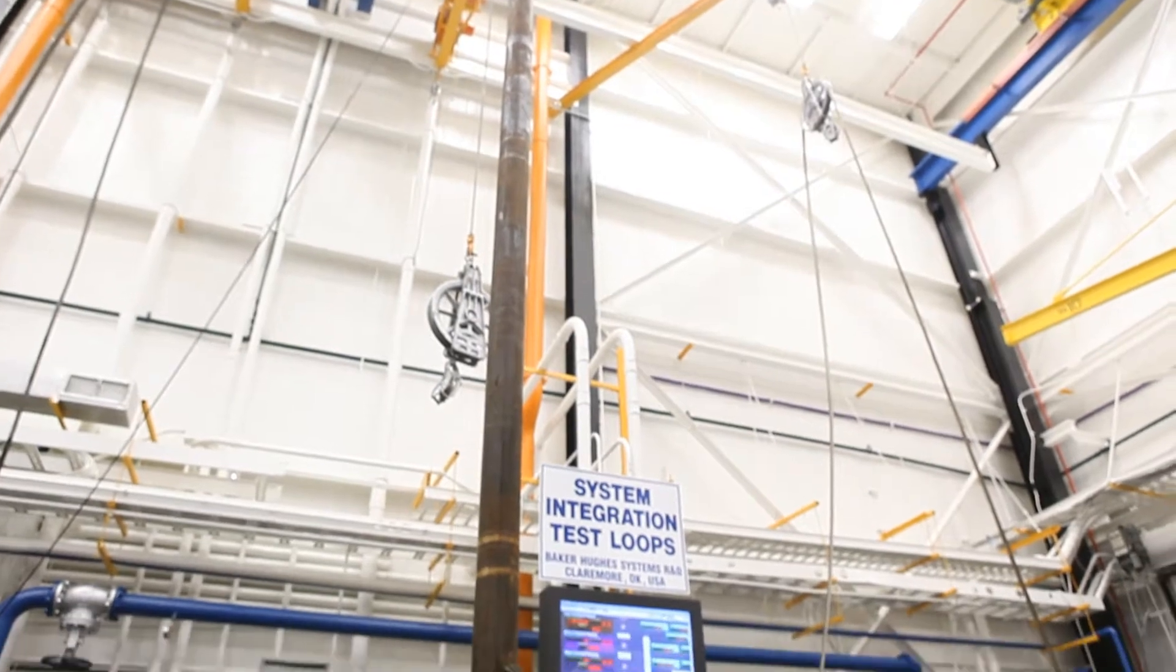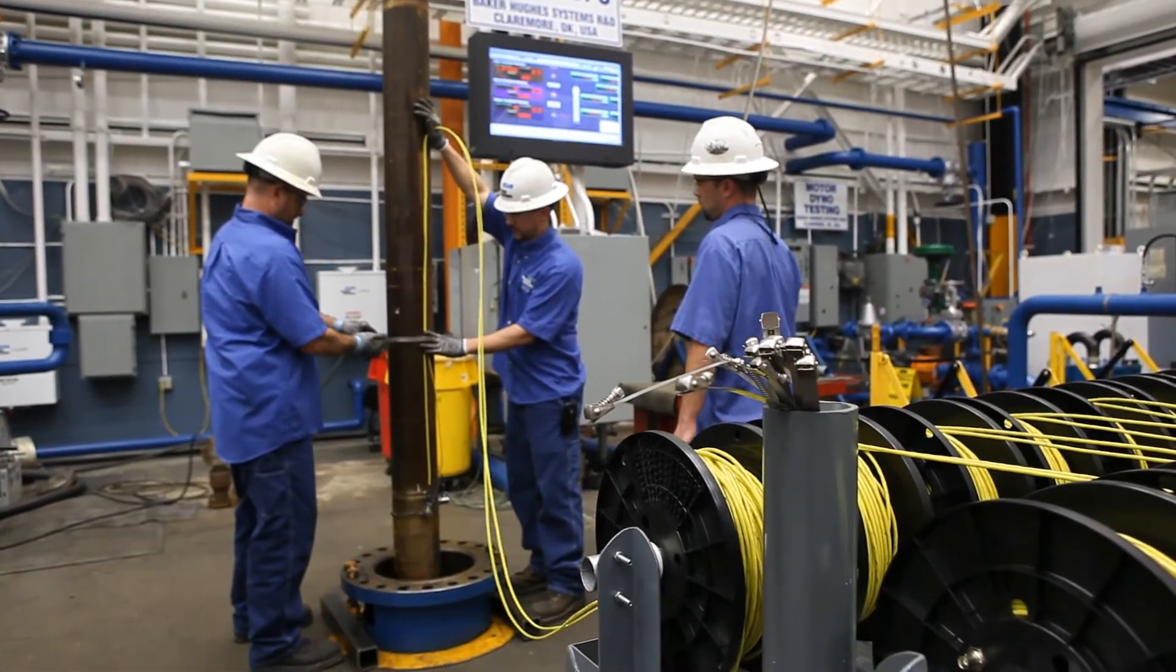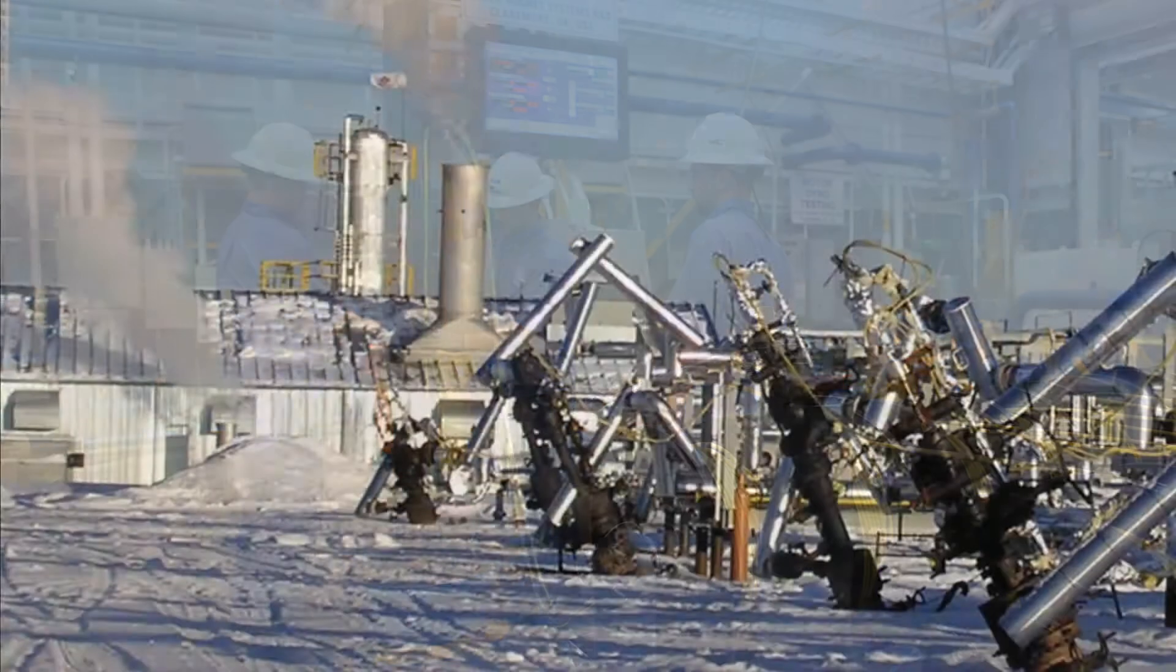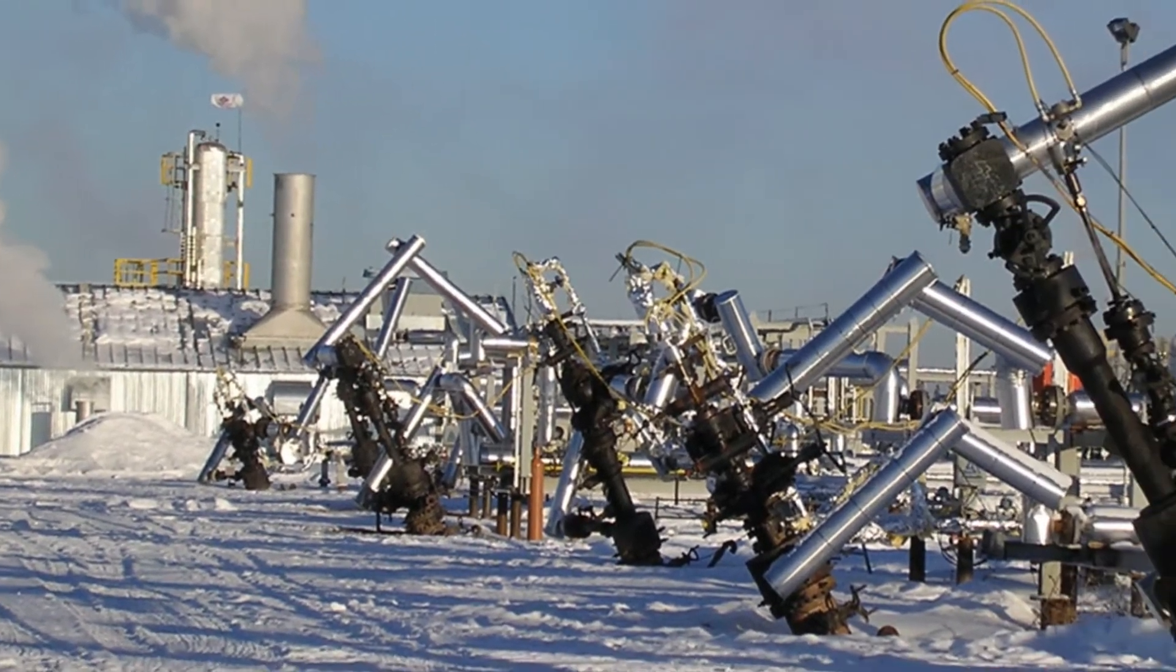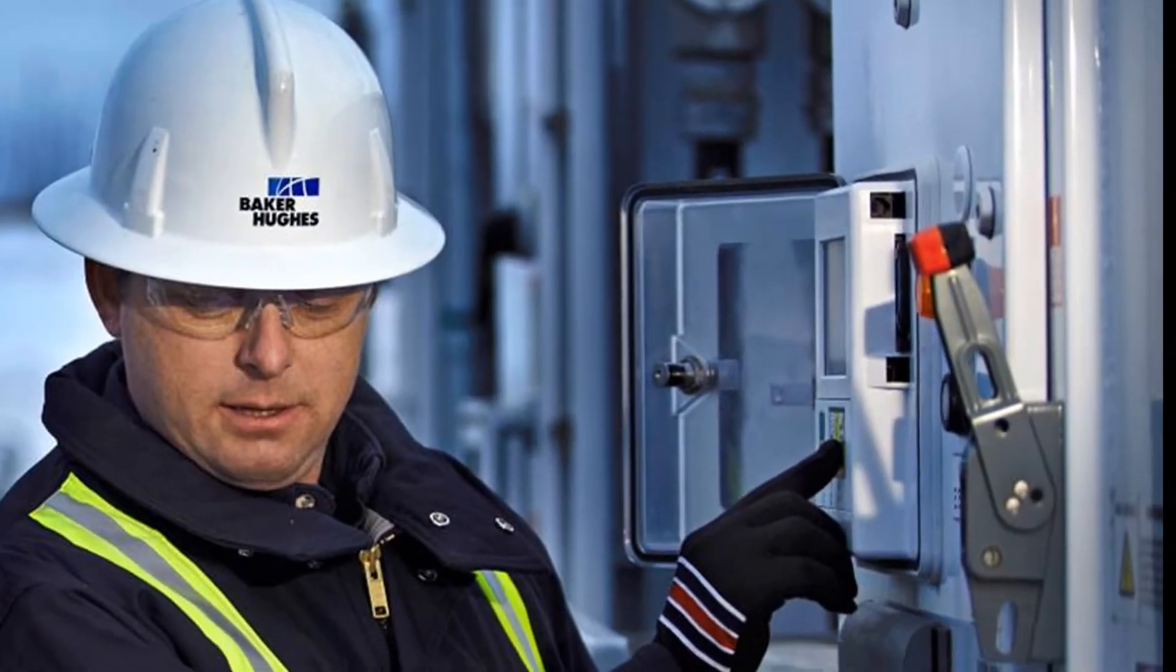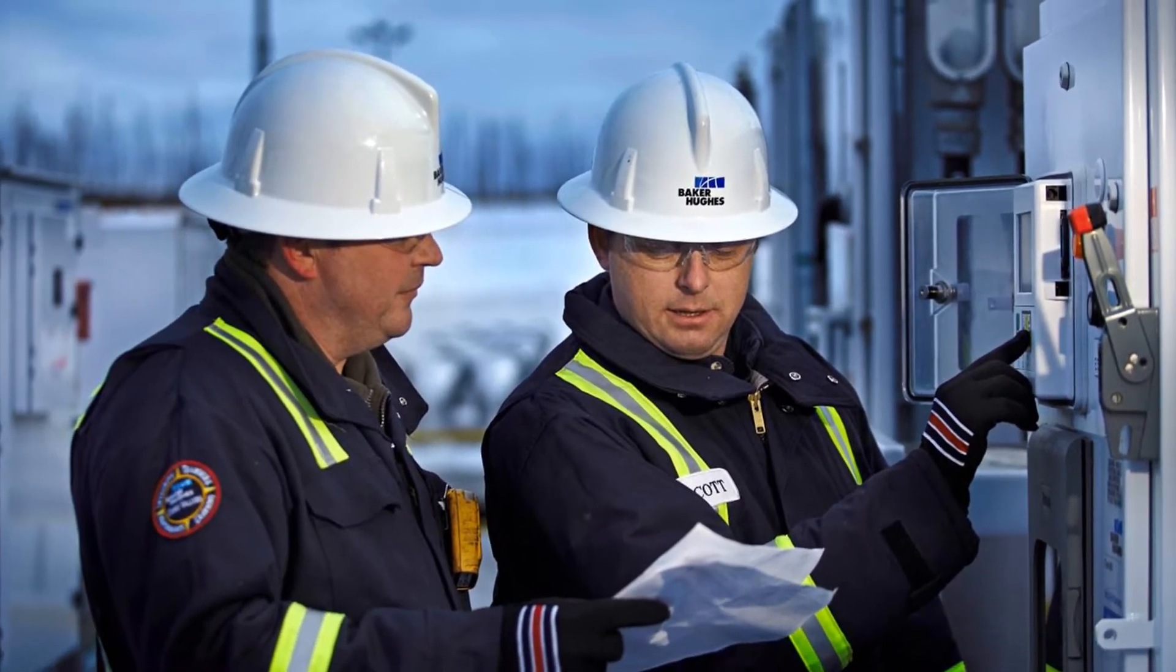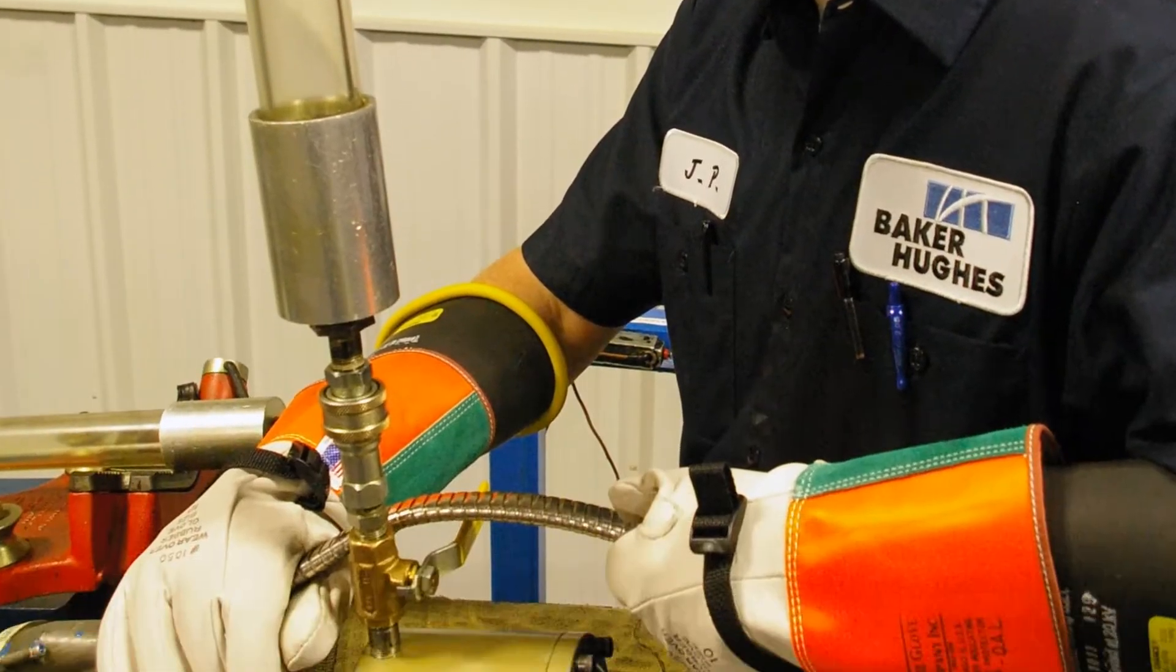The higher potential production, extended run lives, and lower capital costs were the main economic drivers behind the development of our Centigrade ultra temperature ESP system. Introduced in 2010, the ultra temperature system is the first reliable ESP system rated at 250°C bottom hole temperature. The ultra temperature system includes many improvements over previous designs to enable operation at such high temperatures. Electrical and insulation upgrades extend motor run life. High temperature motor oils assure reliability.